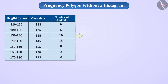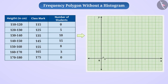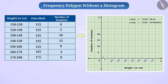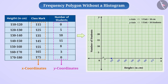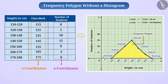Now we will draw the x-axis and y-axis, representing class marks on the x-axis and frequency on the y-axis. Taking an appropriate scale on both axes, we will represent different points, taking class marks as x-coordinates and their corresponding frequencies as y-coordinates. We will represent point O with coordinates (115, 0). Similarly, we will represent the other points. Now we will complete the frequency polygon OPQRSTU by connecting all the points with line segments. In this way, we can obtain a frequency polygon even without a histogram.